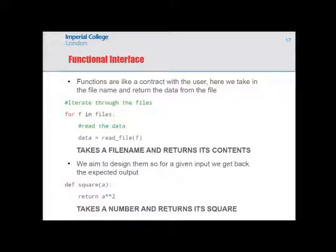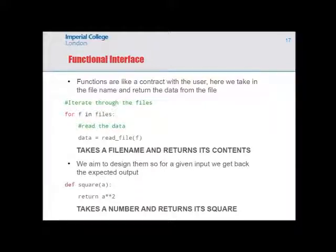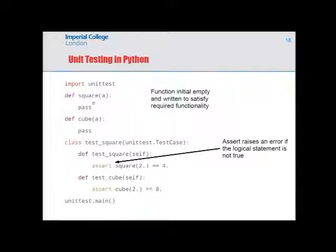This leads to the concept of functional interfaces — a function is like a contract with the user. In the curve-fitting and slider examples, the function had a particular form required by the binding and by curve_fit. For example, a function that reads a filename should return the contents; a square function should return the square of the input. This concept solidifies with unit testing.